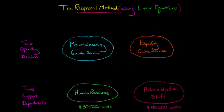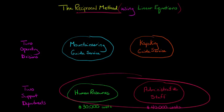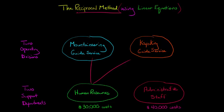You've got two support divisions. You've got HR providing support to the mountaineering and kayaking divisions, and you've got administrative staff that also provides support. But here's the catch. These support divisions provide services to one another as well. So we need to figure out how to allocate those costs. HR has $30,000 in costs and administrative staff has $40,000 in costs.